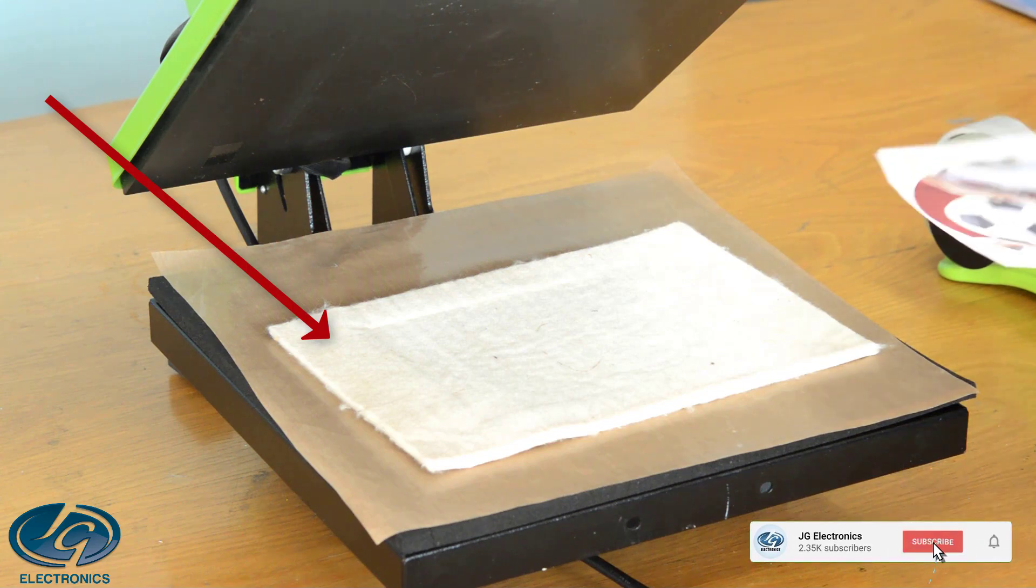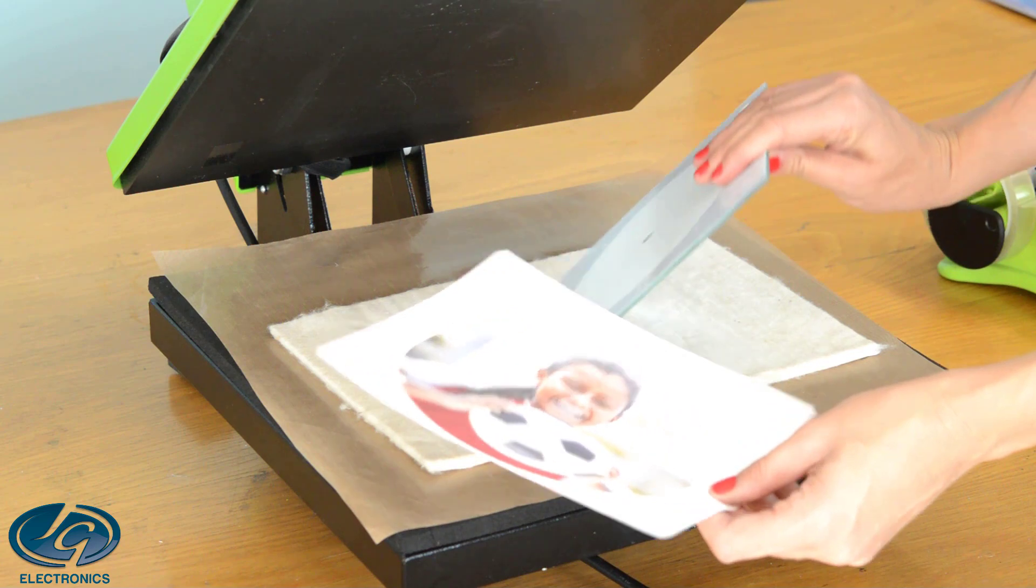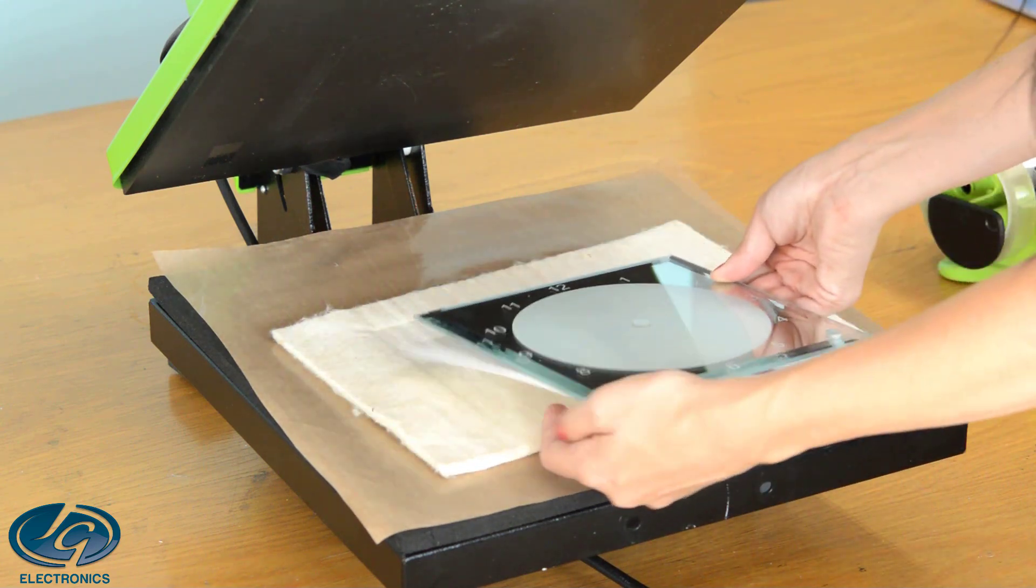Place a Nomex pad on the base of the press first. Place the print at the back of the glass where the white coating is. Make sure you line it up straight.